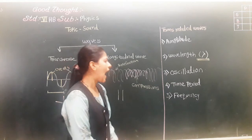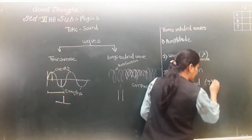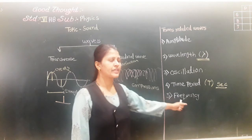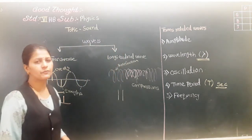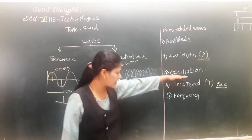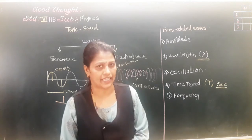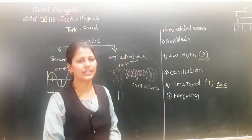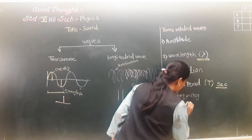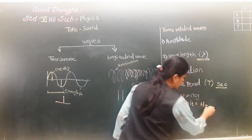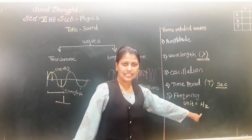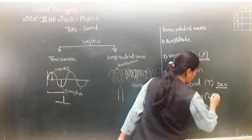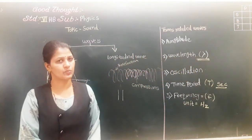Time period is denoted by T and is measured in seconds. Then the next is frequency. Frequency is the number of oscillations completed in a second — in a particular time. That is called frequency. Frequency is measured in hertz, denoted by Hz, and frequency is denoted by the symbol nu (ν).